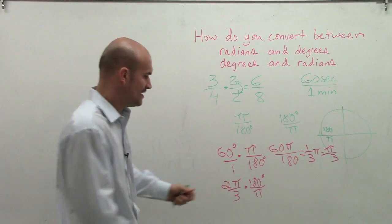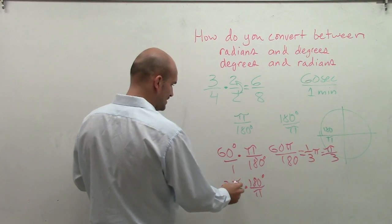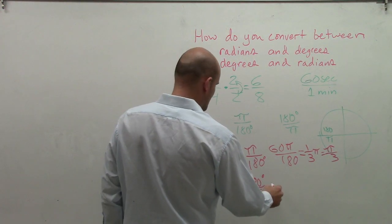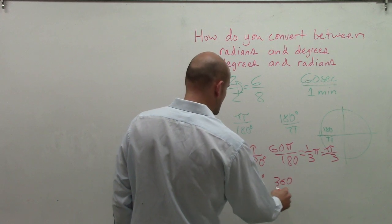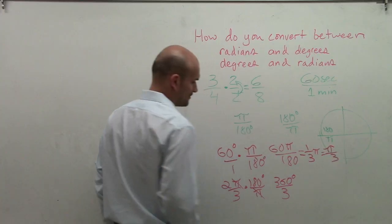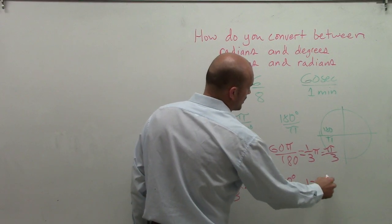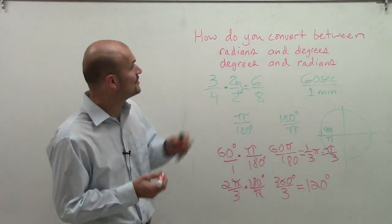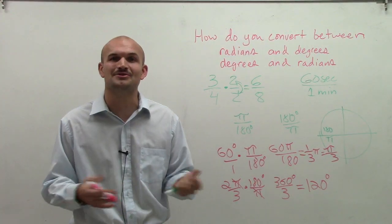Now we just need to simplify this. So as I multiply across, those are going to divide out to 1. I'm left with 360 divided by 3. Therefore, when I work that out, I end up with 120 degrees. So there you go, ladies and gentlemen. That's how you convert between radians and degrees or degrees and radians. I hope you enjoyed. Thanks.